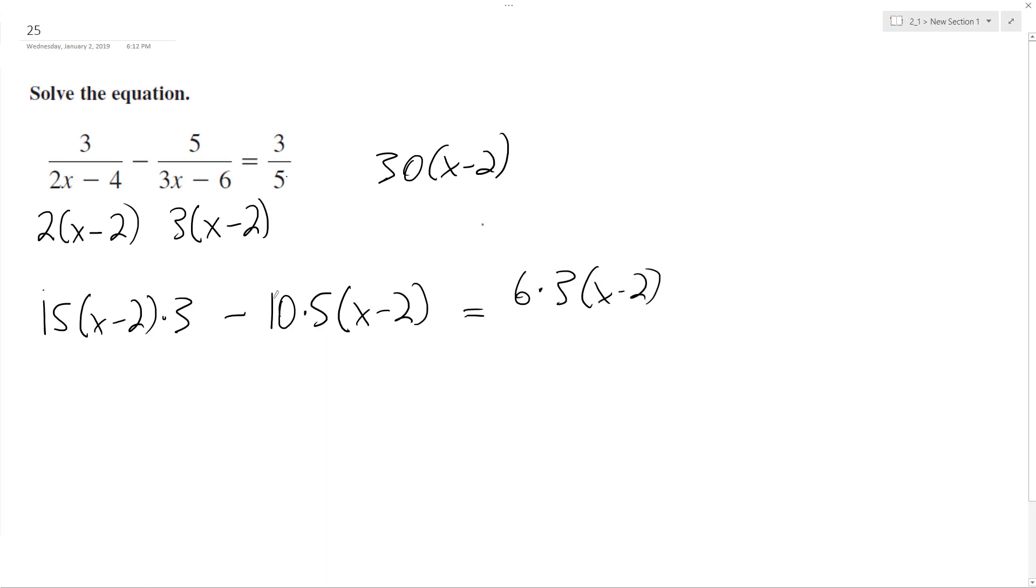And they all share the same common denominator, so I don't even need those anymore. So I have 30, x minus 2—no, excuse me, that's 45. 45 minus 50 x minus 2 equals 18 x minus 2.